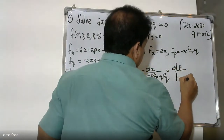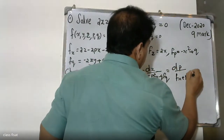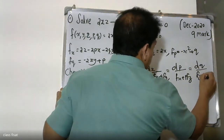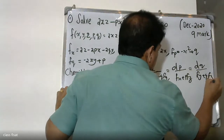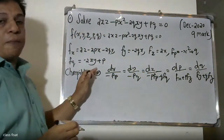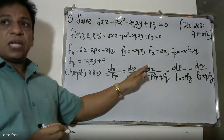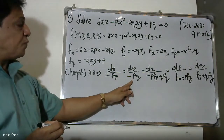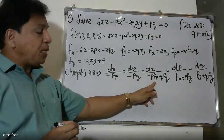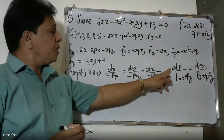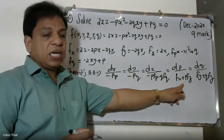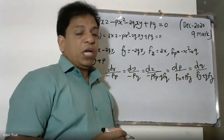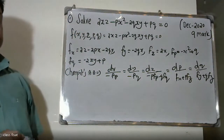The condition for Charpit's method gives: xfp plus pfq equals dq divided by fy plus qfz. Now the Charpit's auxiliary equation is: dx divided by minus fp, dy divided by minus fq, dz divided by minus pfp minus qfq, then dp divided by fx plus pfz, dq divided by fy plus qfz.